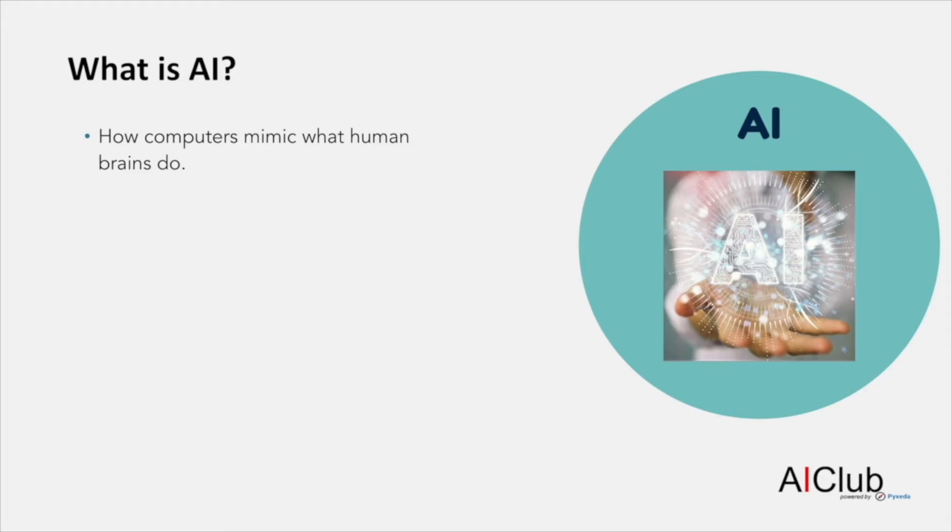Artificial intelligence refers to creating things that show intelligence. What is it that is artificial about this? It's artificial because we as humans have trained something to become smart.